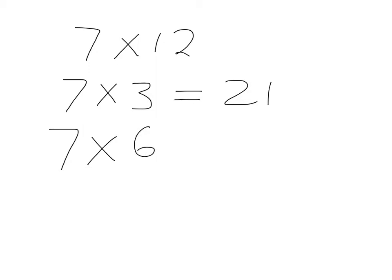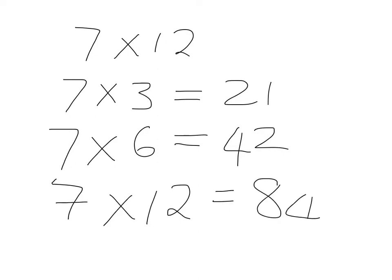So then 7 times 6 is just going to be double that. Well 21 times 2 is 21 plus 21 which is 42. And then I can immediately go through to 7 times 12. I just have to double 42 and I will get 84.